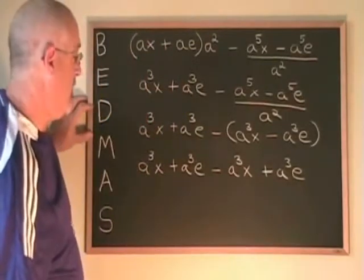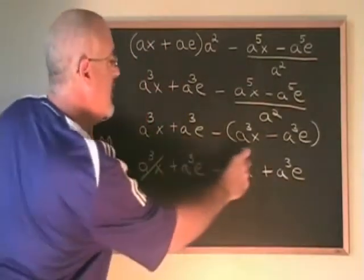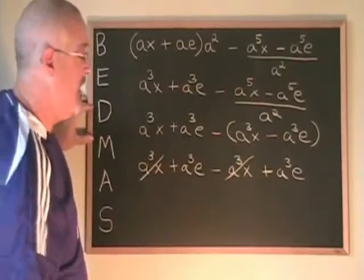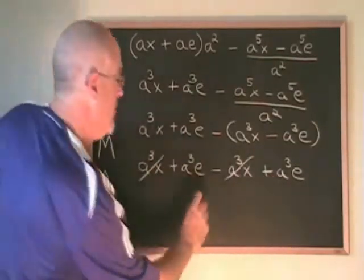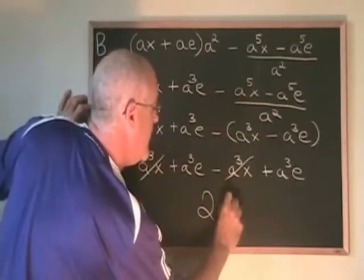Combining similar terms, we have a cubed x minus a cubed x, which cancels. And a cubed e plus a cubed e gives our final answer, which is 2a cubed e.